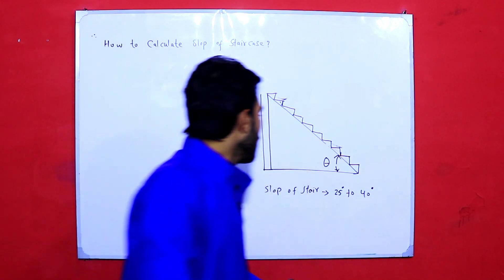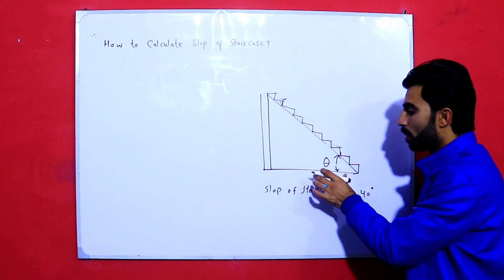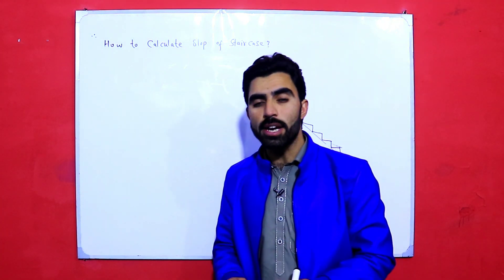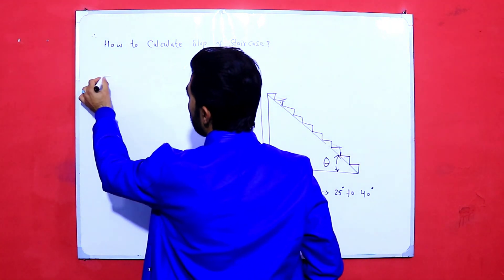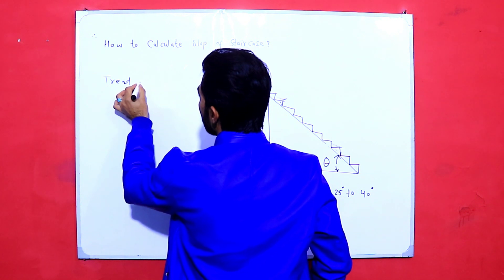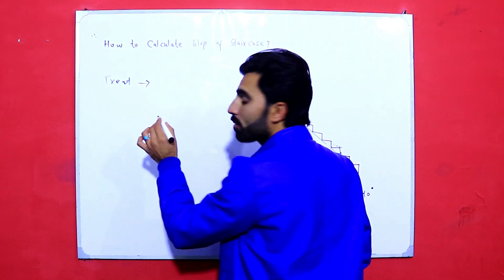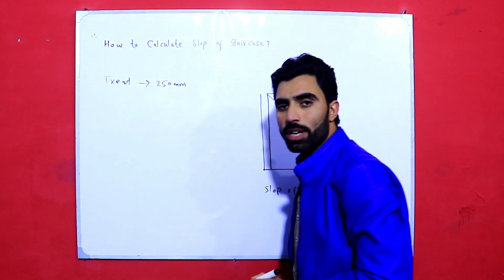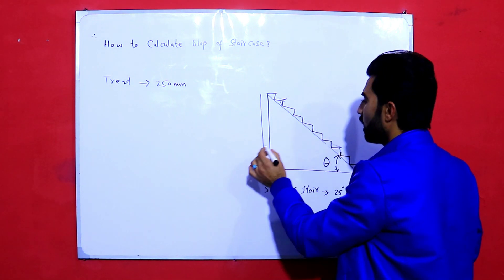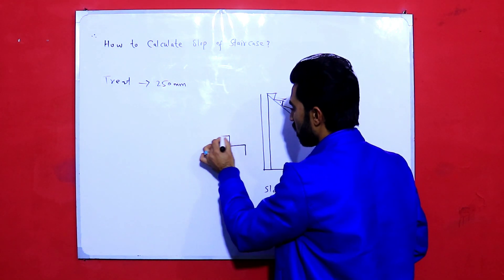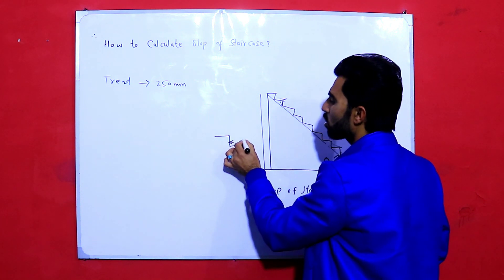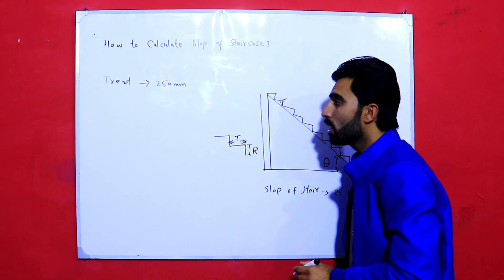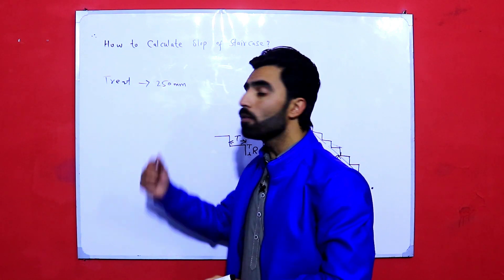So 25 to 40 degrees should be the angle or slope for staircase. You can see this is tangent theta — this is vertical and this is horizontal. I will not discuss from ISR or ACI codes, but I will tell you: the tread of staircase should not be less than 250 mm. As you can see, this is called the tread.